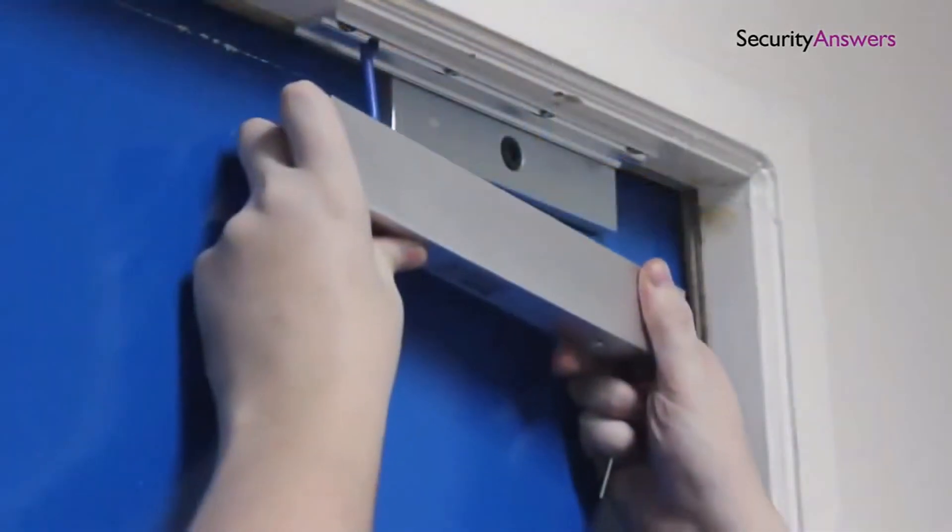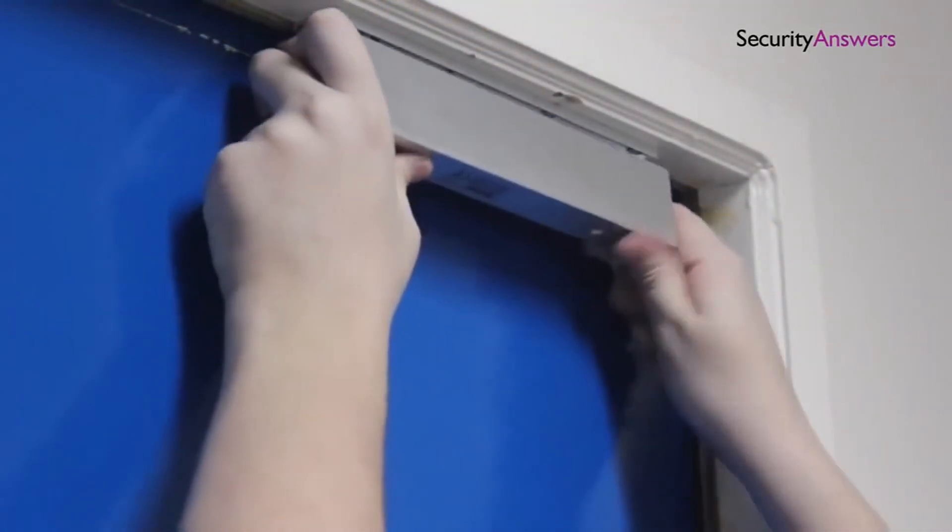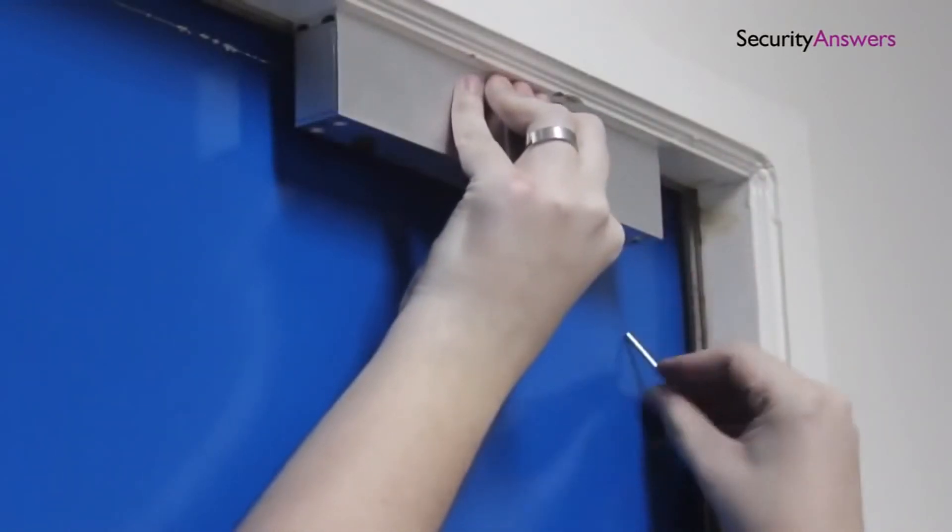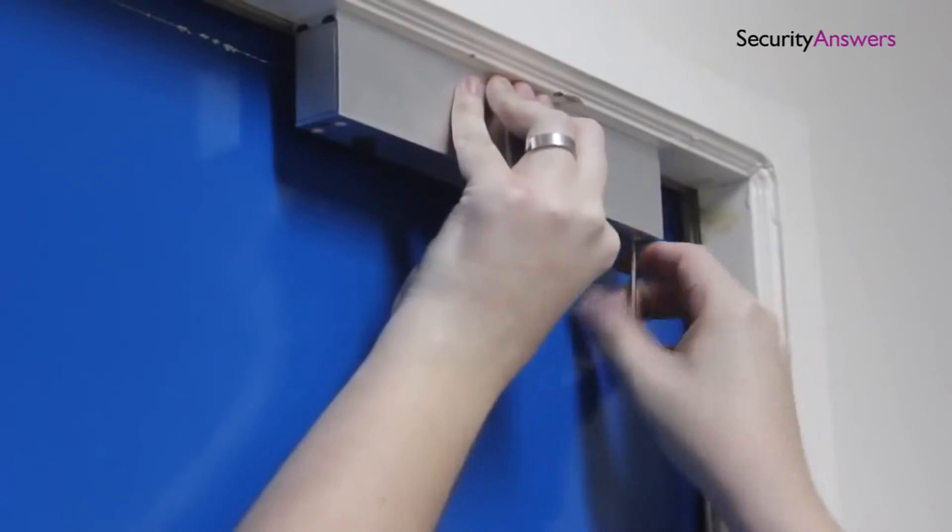Now thread your cable through the hole you made and position the lock to ensure the fitment is correct. If everything lines up correctly, go ahead and tighten into place using the provided screws.